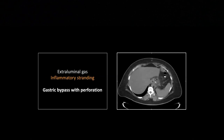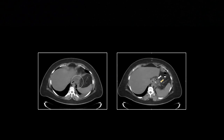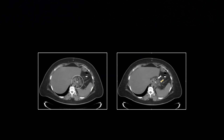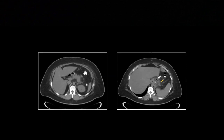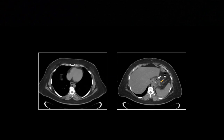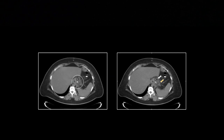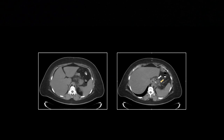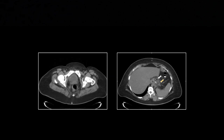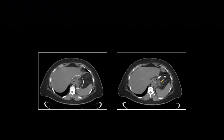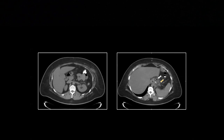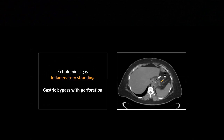On to perforations. This is a non-contrast scan, which is suboptimal, but you can see extra-luminal gas beyond the confines of the manipulated stomach with plenty of surrounding stranding — a straightforward case of gas outside the gastrointestinal tract. There is that staple line and efferent loop. This is probably an older case where they simply stapled the stomach without rerouting the small bowel.